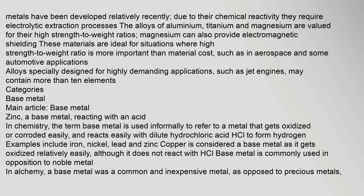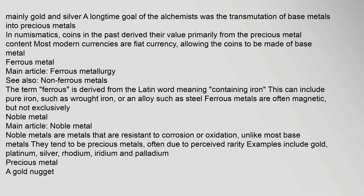In alchemy, a base metal was a common and inexpensive metal, as opposed to precious metals — mainly gold and silver. A long-time goal of alchemists was the transmutation of base metals into precious metals. In numismatics, coins in the past derived their value primarily from precious metal content; most modern currencies are fiat currency, allowing coins to be made of base metal. The term 'ferrous' is derived from the Latin word meaning 'containing iron,' and can include pure iron such as wrought iron, or an alloy such as steel. Ferrous metals are often magnetic, but not exclusively.